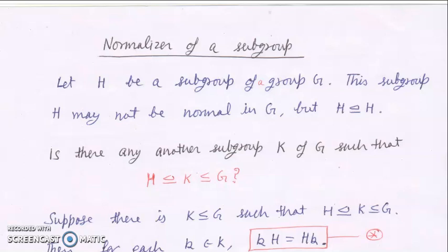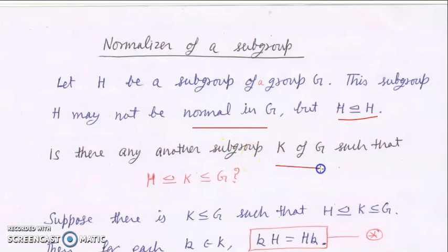Suppose H is a subgroup of G. This subgroup may not be a normal subgroup of G, but H will be normal in itself by the definition of normal subgroup. The question is: is there any other subgroup K such that H is normal in K, although K may not be normal in G? Is there any subgroup K which contains H as a normal subgroup?